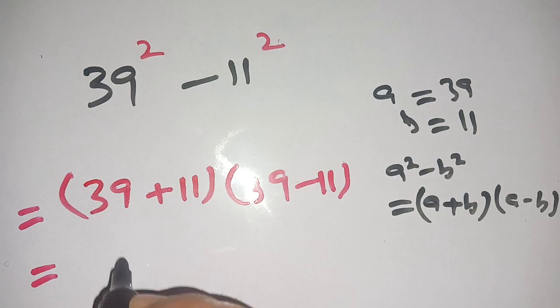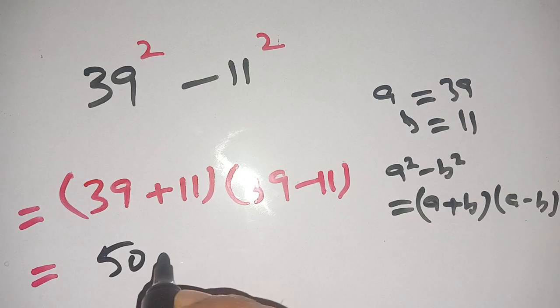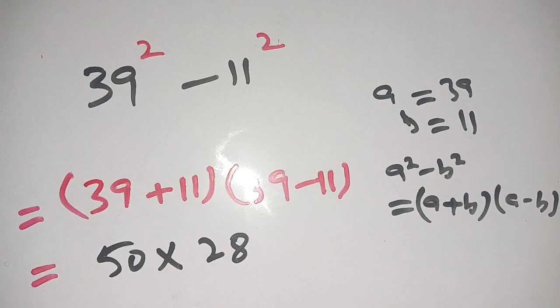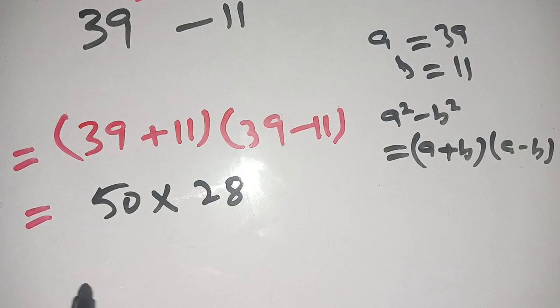Now we have 39 plus 11, it becomes 50 times 39 minus 11, it becomes 28.